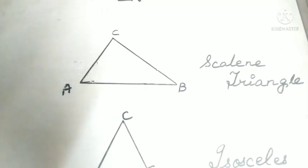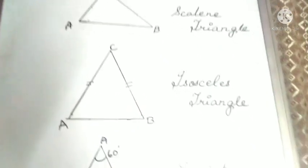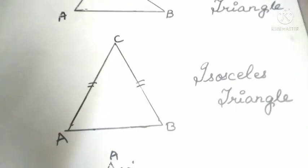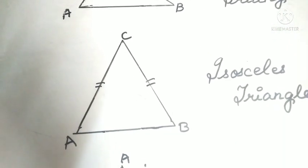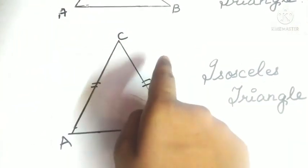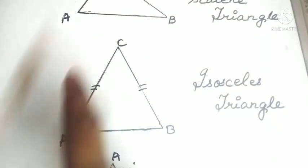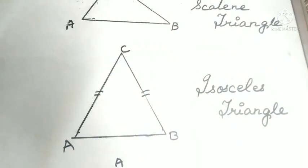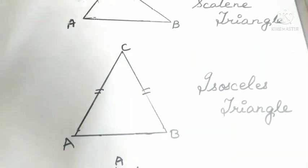Now we are going to learn what is an isosceles triangle. A triangle whose two sides are equal is known as an isosceles triangle. In an isosceles triangle, these two sides are equal. Triangle ABC is an isosceles triangle as AC and CB are equal.